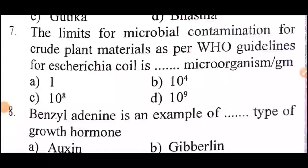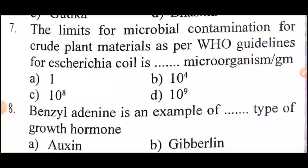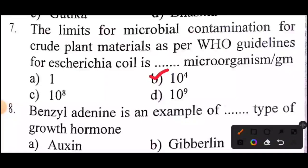Seventh question: The limits for microbial contamination for crude plant materials as per WHO guidelines for S.H.M. coils is dash microorganism per gram. Answer: Option B — 10 to the power 4.